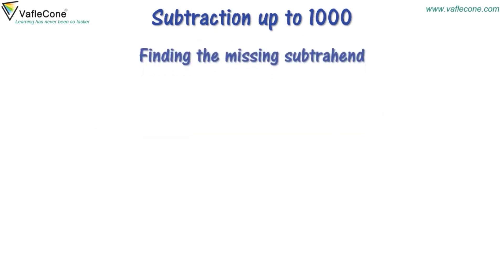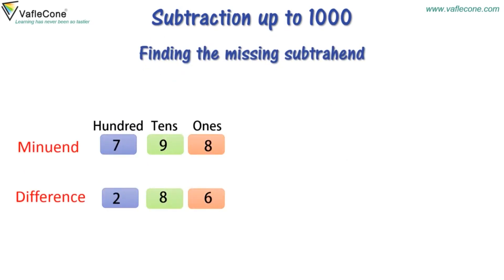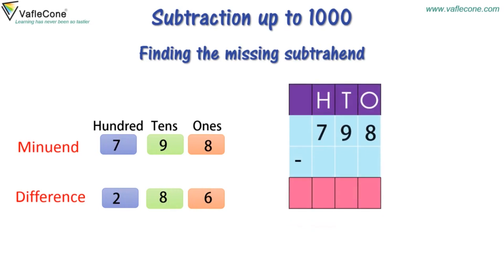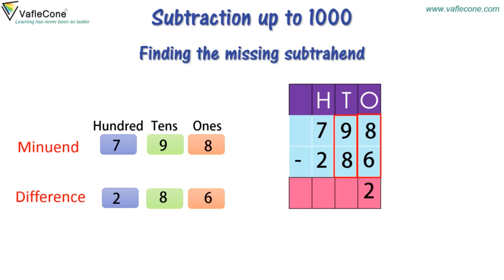To find the missing subtrahend, when we know the difference and the minuend, subtract the difference from the minuend. Here: 798 minus 286. Subtracting at the 1's place: 8-6 is equal to 2. At the 10's place: 9-8 is equal to 1. At the 100's place: 7-2 is equal to 5. So the answer is 512. This missing subtrahend is 512.